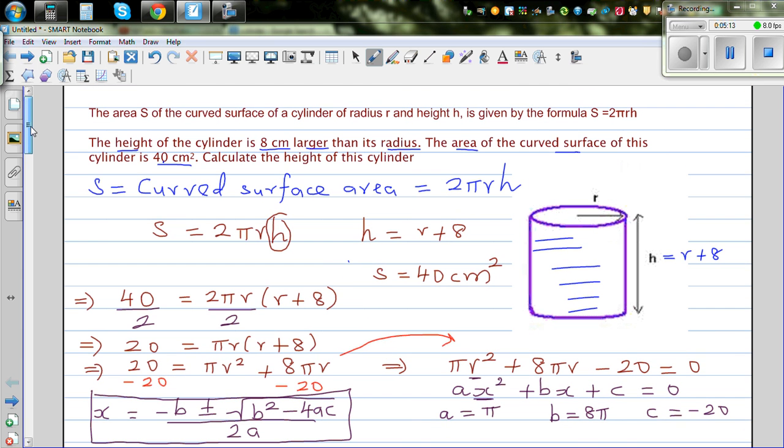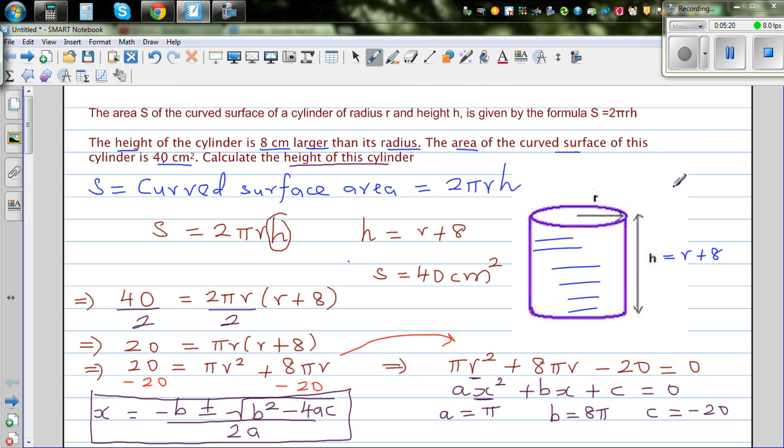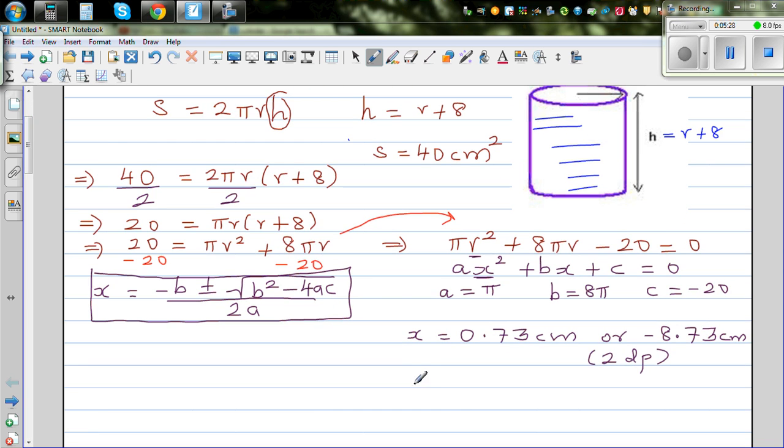The question is calculate the height of the cylinder. So your height is r plus 8. Here you have to say, well, your x is r. So r is 0.73 or minus 8.73. Good to always check. But your radius has to be greater than 0, which implies r is 0.73 centimeters.